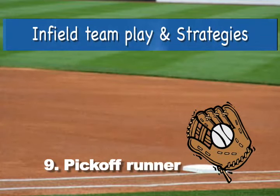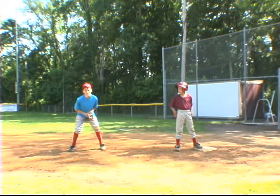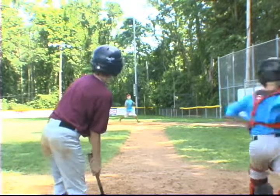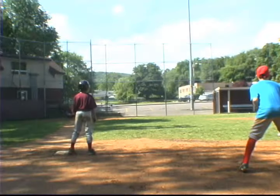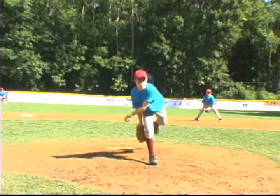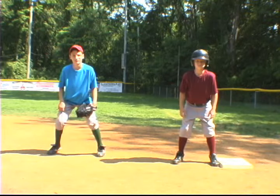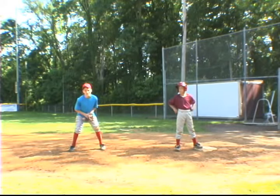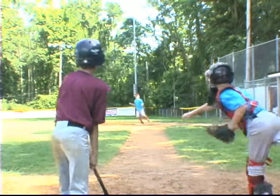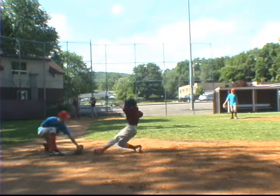Play nine: pick off secondary base runner at first with pitch out. With runners on first and second, the pitcher pitches out and an attempt is made at the runner on first. The coach can signal the fielders of a pick-off play geared to getting the base runner at first out. Remember that the base runner at first is not the lead runner, so the focus will appear to be on the runner at second. The first baseman covers close to the base. The pitcher throws a pitch out, the first baseman runs toward the base as the ball crosses home — hopefully the base runner is taking an aggressive lead — and the catcher quickly throws the ball to first.